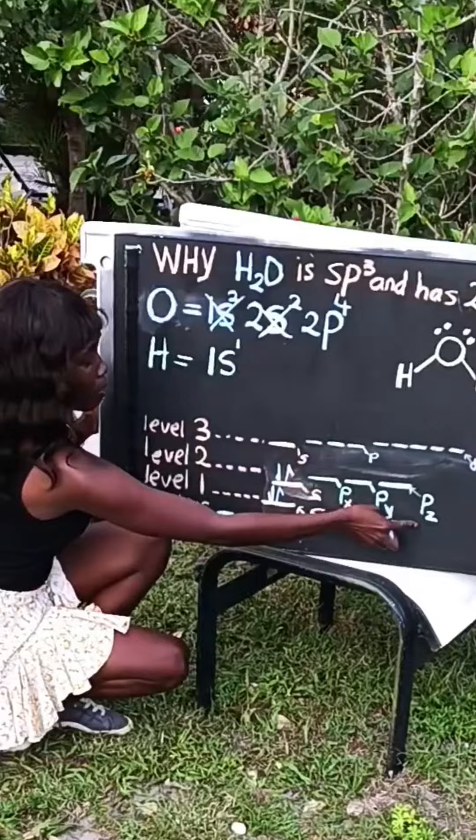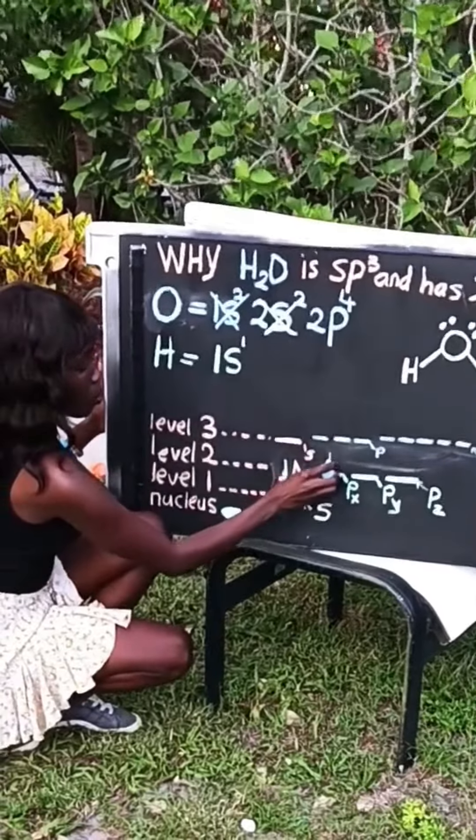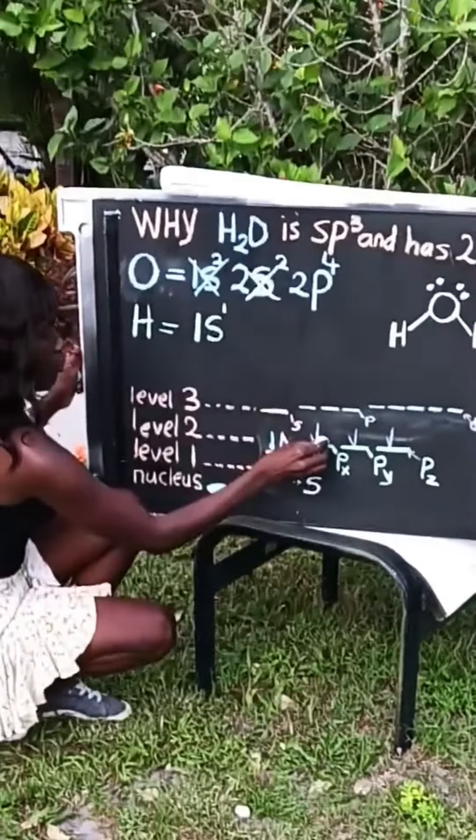And you have your px, py, pz. One goes into each p orbital first. So we have four p's. One, two, three, and then the four.